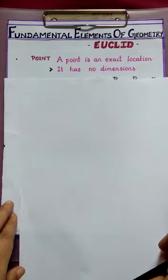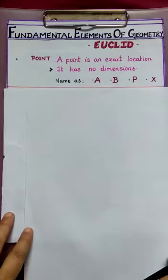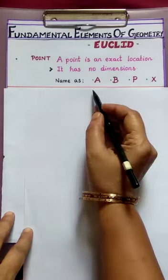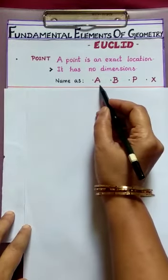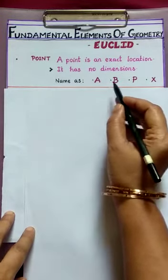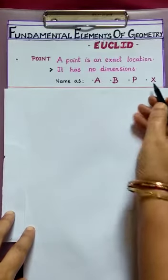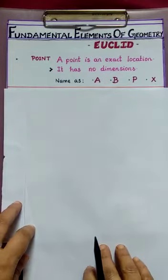Now, how to name a point? Usually, we name a point by using a single capital letter like point A, point B, point P, point X and so on. So this is about point.